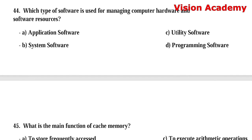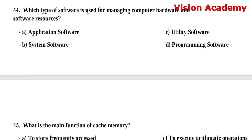Question 44: Which type of software is used for managing computer hardware and software resources? Option A: application software. Option B: system software. Option C: utility software. Option D: programming software. The right answer is Option B, system software.